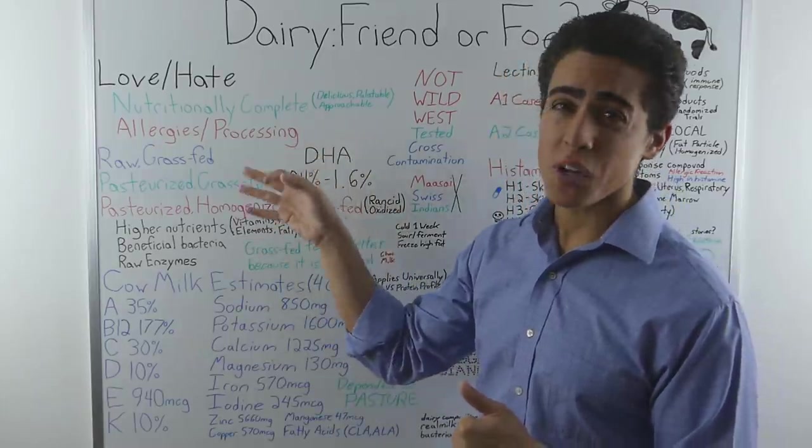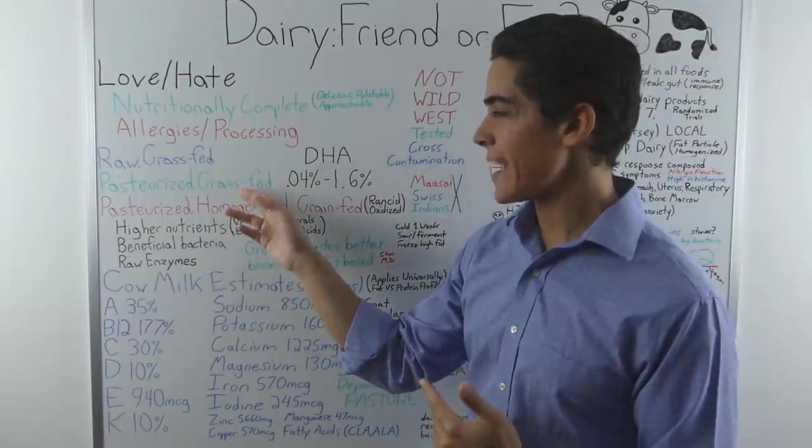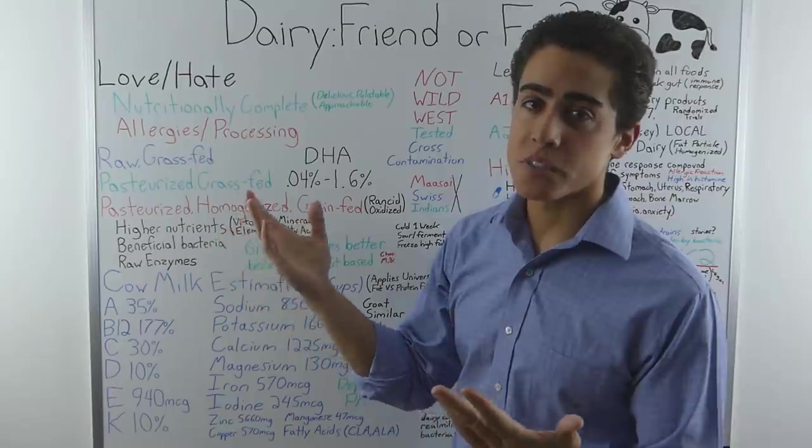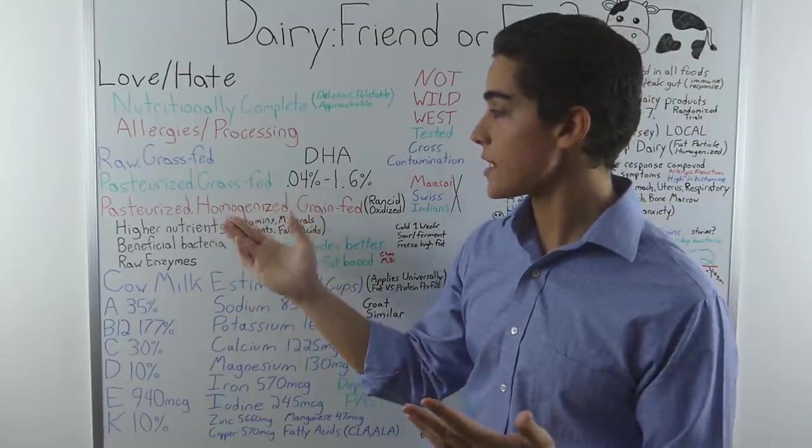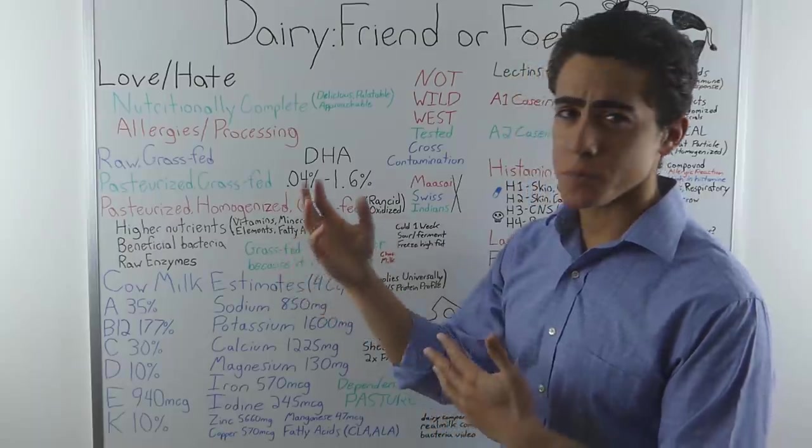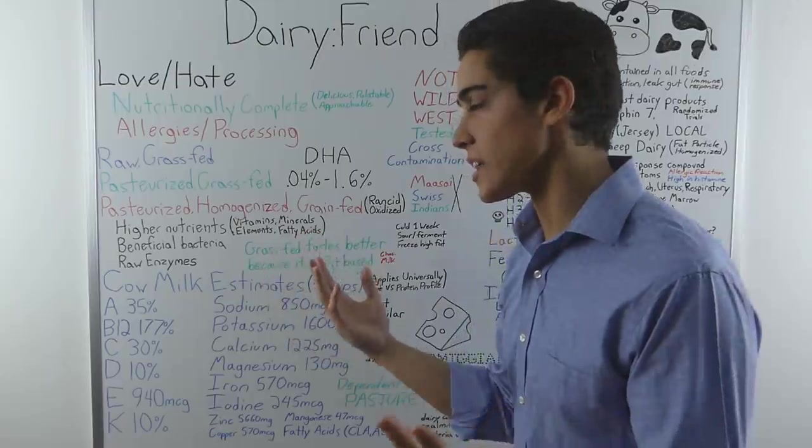So there are three main categories. Raw, grass-fed, ideally what we should consume. Pasteurized, grass-fed, that should really only be consumed if it's your only source of fat. Pasteurized, homogenized, grain-fed, which is most supermarket dairy, which really shouldn't be consumed unless you had to.